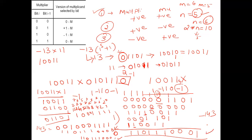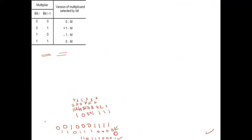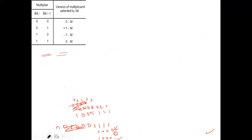In Example 4, we are going to take both numbers as negative. So we will take minus 13 into minus 11. Definitely the output will be positive 143. Let me show how to perform this process.